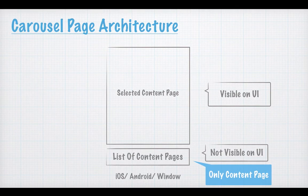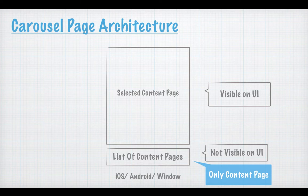Let's talk about the architecture of the carousel page. You always have a visible area which displays the content of the content page on the screen, but under the hood you actually have a list of content pages. On all platforms, those content pages are not visible in the UI unless you have swiped to bring that page on the screen.